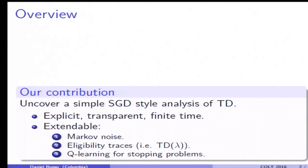To versions of TD that use eligibility traces, known as TD-lambda, and to Q-learning applied to a particular class of high-dimensional optimal stopping problems.